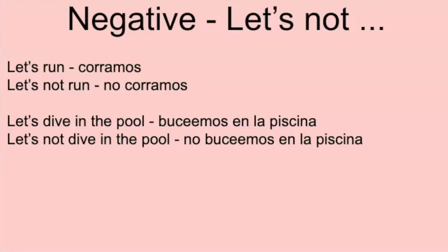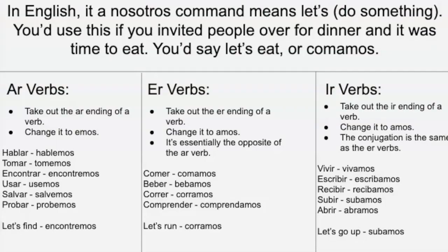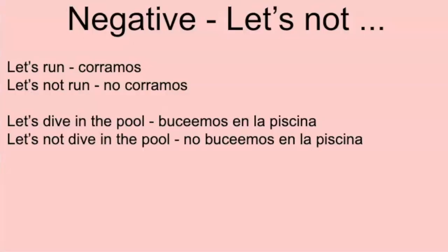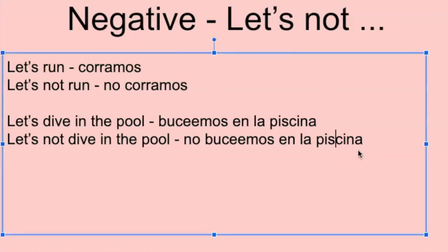So going into the negative versions — those we just covered were the affirmative. In the negative, it's just saying 'let's not do something.' We already said 'correr' is 'corramos' — 'let's run.' And 'let's not run' is 'no corramos.' So 'busear' — the way you spell it, the A changes to an E, so there's a double E. 'Let's dive in' is 'buceamos,' and 'let's not dive' is 'no buceamos.'